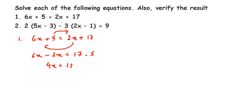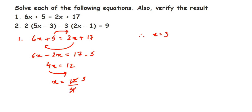Now we have to get the value of x. We don't want 4 here, so I'm going to transpose 4 to the other side. Since 4 is in multiplication, when transposed it becomes division: 12 divided by 4. Cancelling: 4 threes are 12, so therefore x is equal to 3.